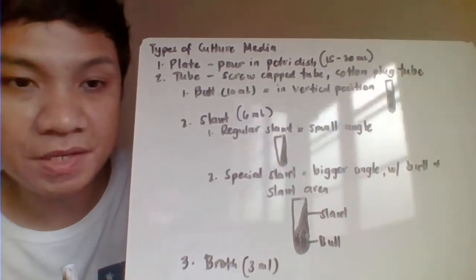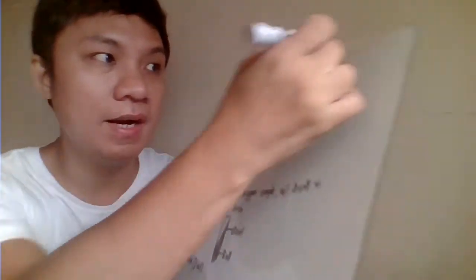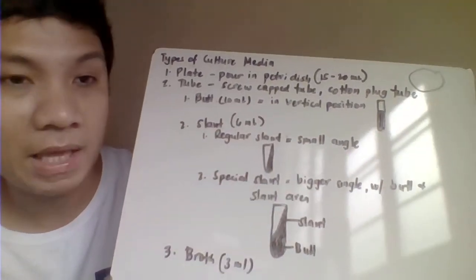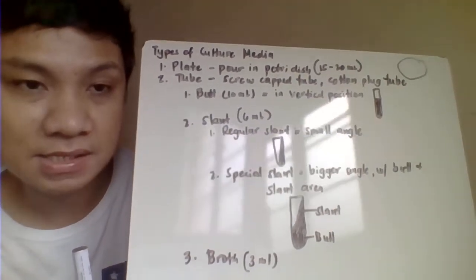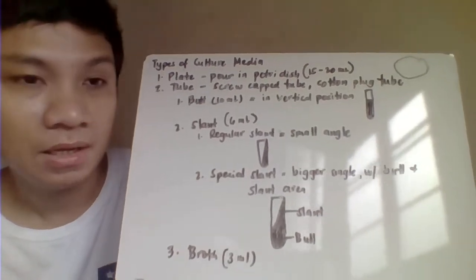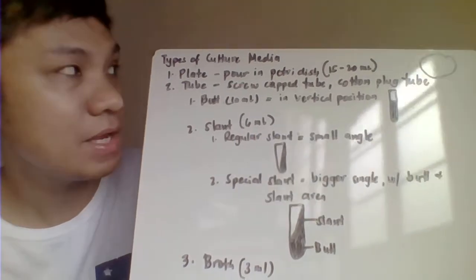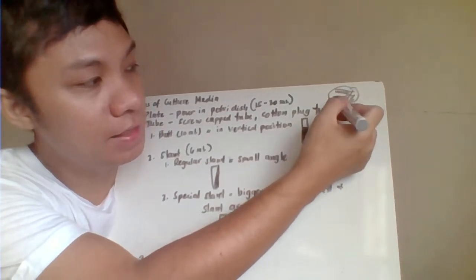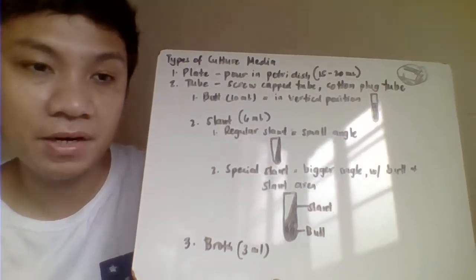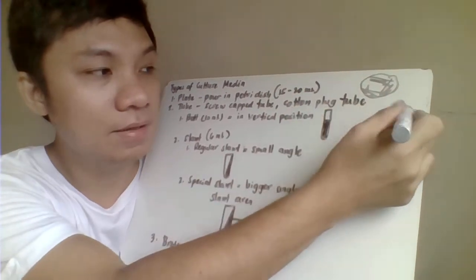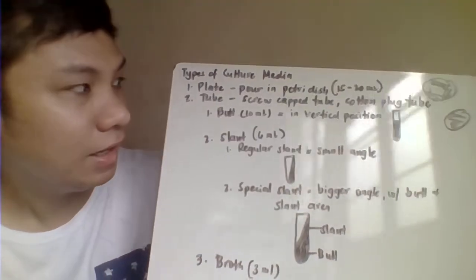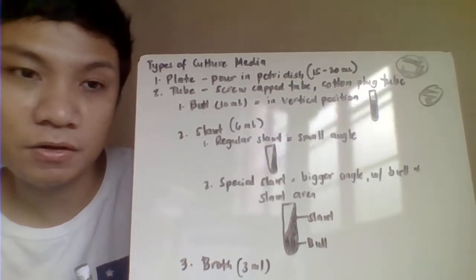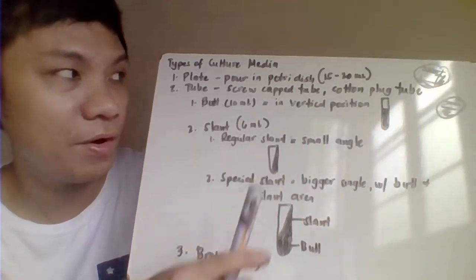The plate is a petri dish into which you pour approximately 15–20 ml of sterilized culture media. To inoculate bacteria on a plate, you can use quadrant streaking or general isolation streaking. Another type of culture media container is the tube, where sterilized media is placed in a screw-cap tube.